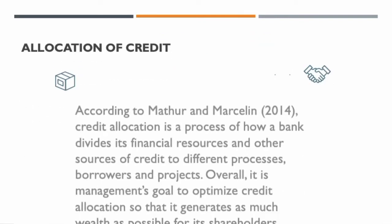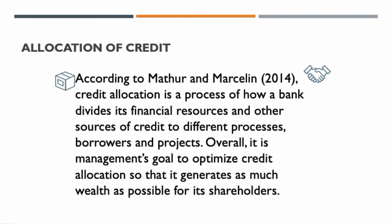Next is the allocation of credit. According to Matter and Marceline (2014), credit allocation is a process of how a bank divides its financial resources and other sources of credit to different borrowers and projects. Overall, it is managed with the goal to optimize credit allocation so that it generates as much wealth as possible for its shareholders.